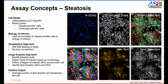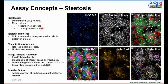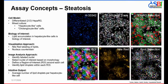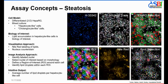The steatosis assay concept: the cell model is differentiated 2D HepRG cultures containing a mixed population of cholangiocyte-like and hepatocyte-like cells with different morphologies. The biology of interest is lipid accumulation, and the visualization approach is Nile Red labeling of lipids with a nucleus counterstain. For image analysis, we identify labeled nuclei, select nuclei of interest based on the morphology of hepatocyte-like cells — the smaller, more compact nuclei — define a region of interest around each cell, identify lipid droplets within each region, and the output is the average number of lipid droplets per hepatocyte-like cell.